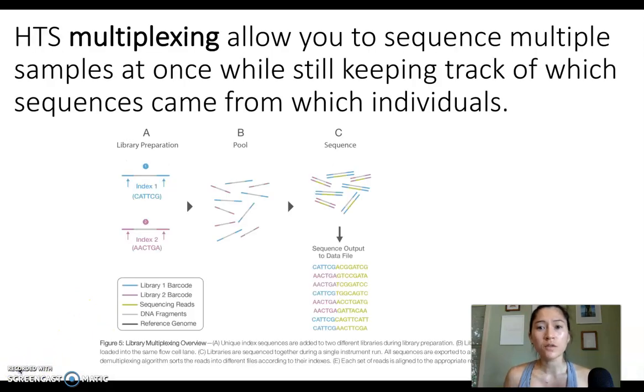As we've said before, high-throughput sequencing is called high-throughput because it sequences a bunch of different samples at once. It's massively parallel sequencing.